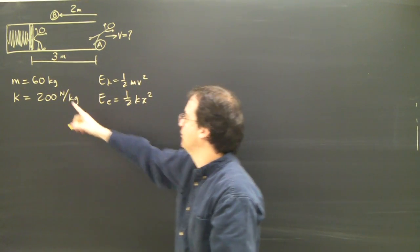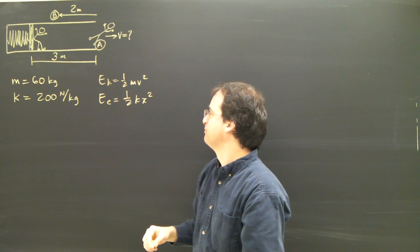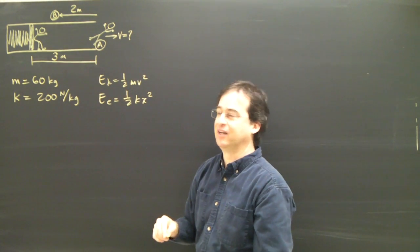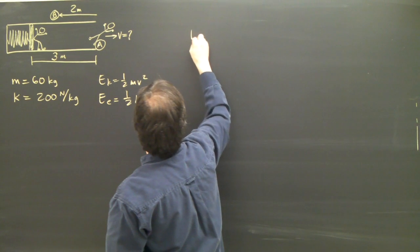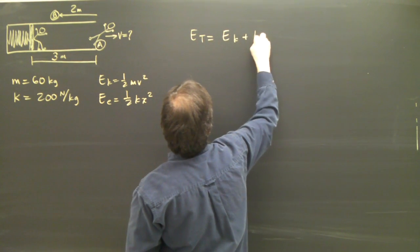So in this question I'm given the mass of the person and the spring constant, 200 newtons per kilogram. So I want to find out how fast is this person going at A. So what we do is we say the total energy is equal to the kinetic plus the elastic.